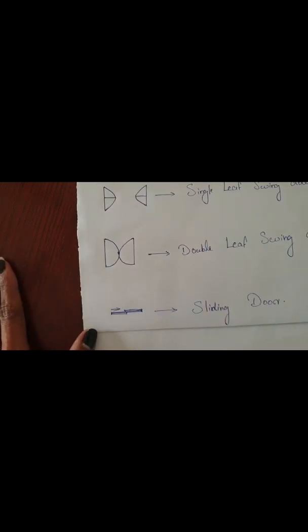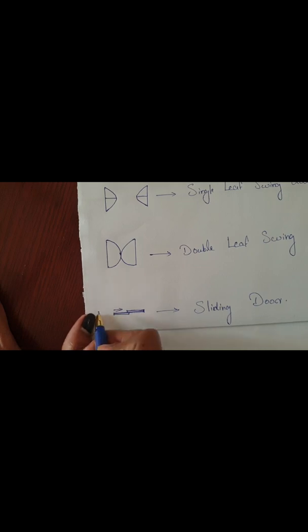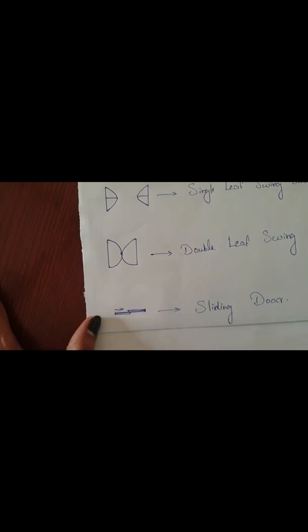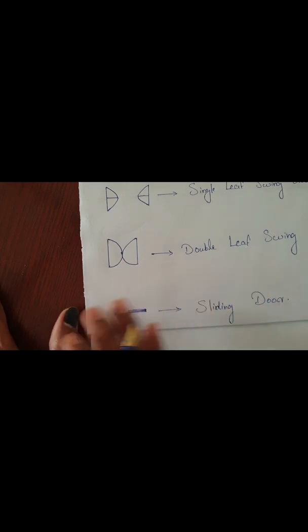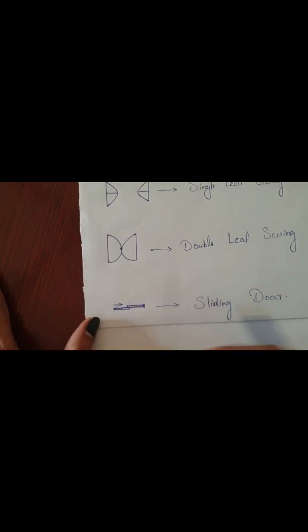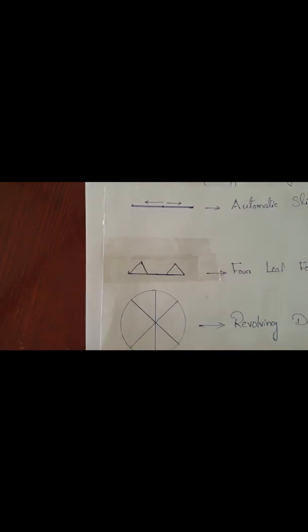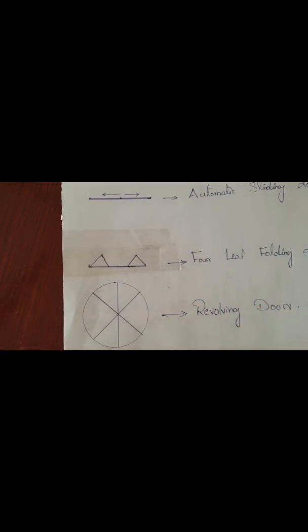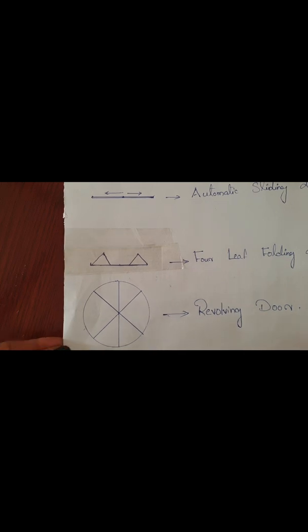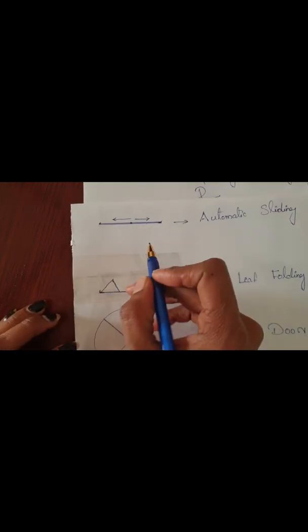Next one is sliding door. Sliding door means we can slide it in the right direction or left direction, or both shutters can slide. That is sliding doors. If you are staying in flats, you know that in balconies normally we provide sliding doors. I am just explaining so that when you see a plan you can identify the symbols.